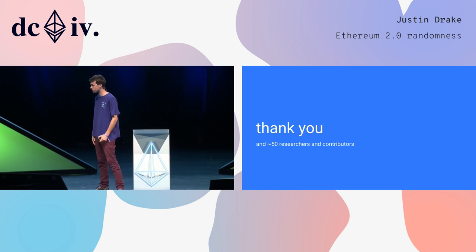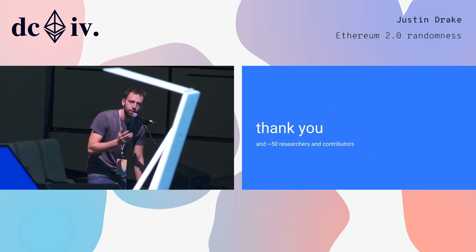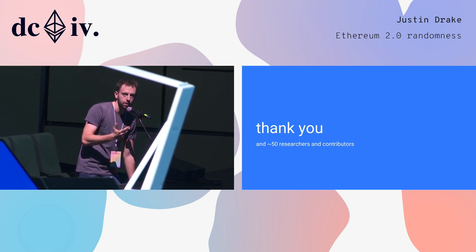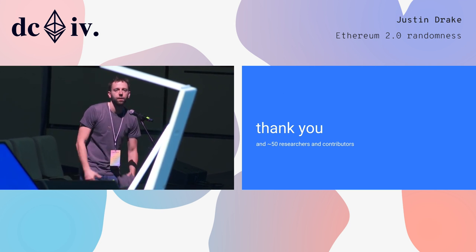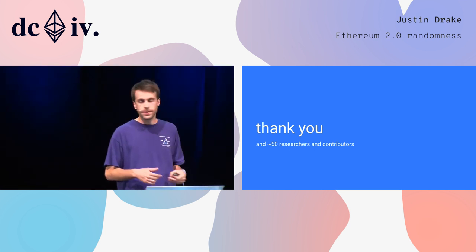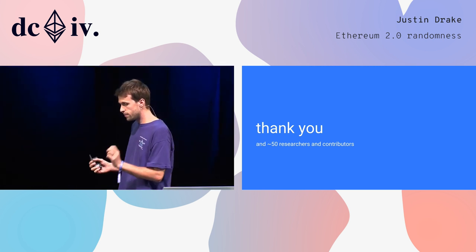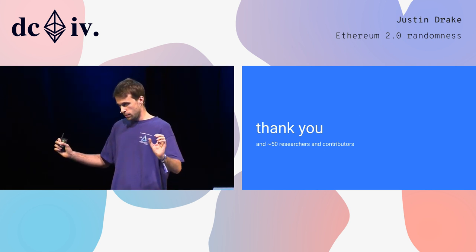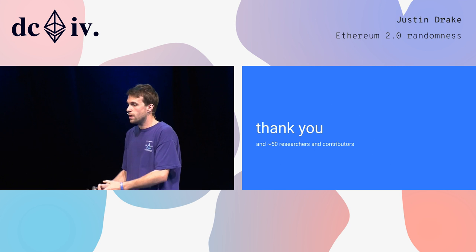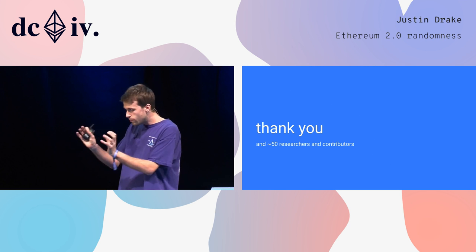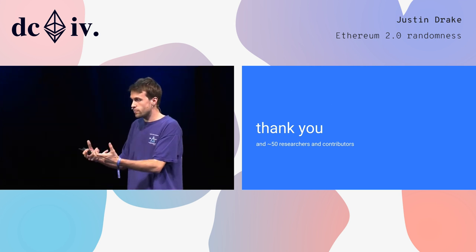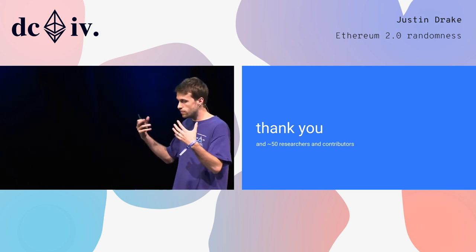Question about the RSA number generation ceremony: what is the input from each participant, and how is the resulting number bound to 2,048 bits? Basically, every participant has a random number, and you take the random numbers from every participant, add them in such a way that no one knows the total, and then do bi-primality testing on the result — checking, without anyone knowing the secrets, that the result is the product of two primes. If it's not, you repeat again and again until you find a suitable number.